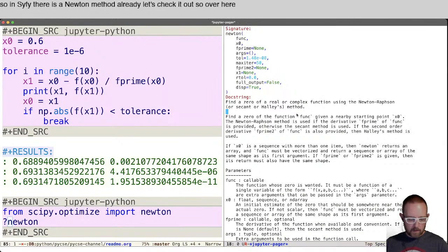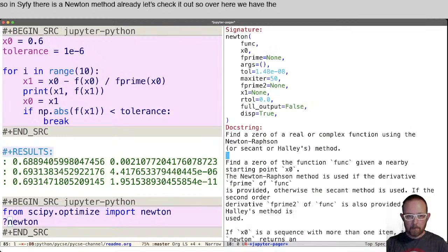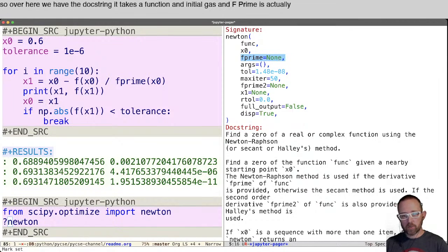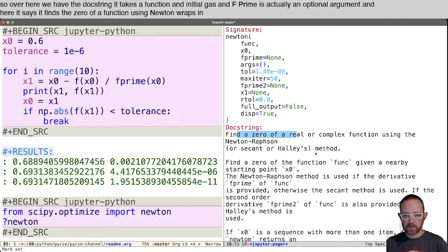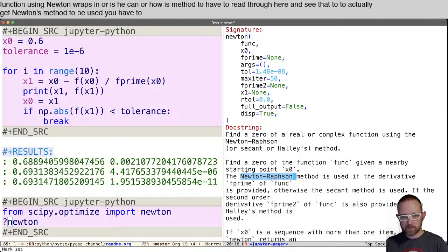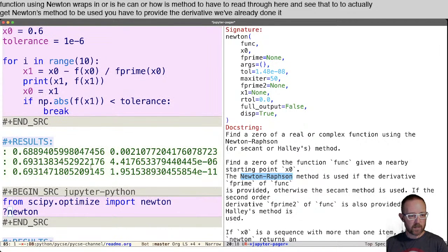So over here we have the doc string. It takes a function, an initial guess, and f prime is actually an optional argument. And here it says it finds the zero of a function using Newton-Raphson or secant or Halley's method. So you have to read through here and see that to actually get Newton's method to be used, you have to provide the derivative. We've already done it. So let's try it out.